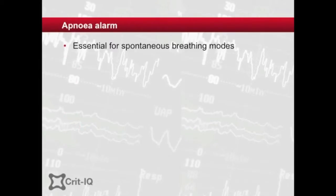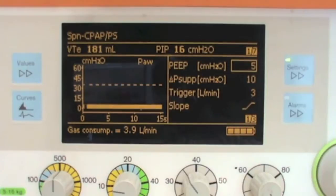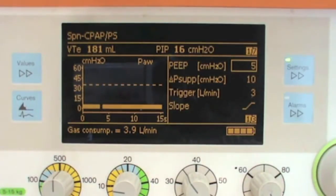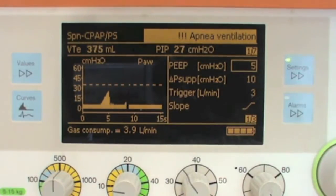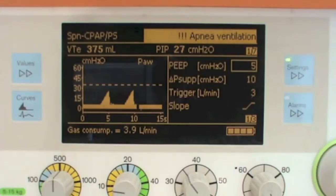The apnoea alarm is important in modes where initiation of the breath is entirely triggered by the patient, for example pressure support modes. In these circumstances, if the patient becomes apnoeic, no ventilation will occur and the patient would rapidly deteriorate. Most ventilators, in addition to alarming, will cycle into a mandatory backup rate when this alarm is triggered.